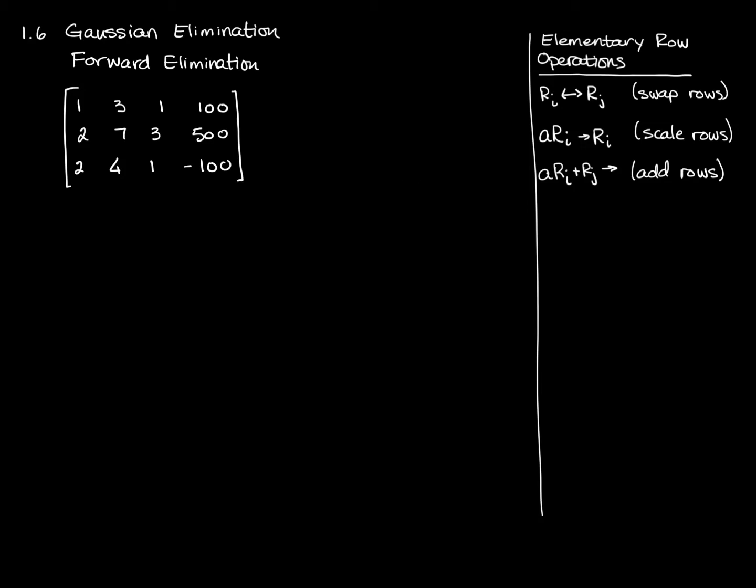So I can scale a row. And the third rule that's presented in your book is that you can add a row to a scaled row and replace that. Replace the second row with the sum of a scaled first row and the second row, a scaled row and another row. So I think this is kind of overstating it, actually.